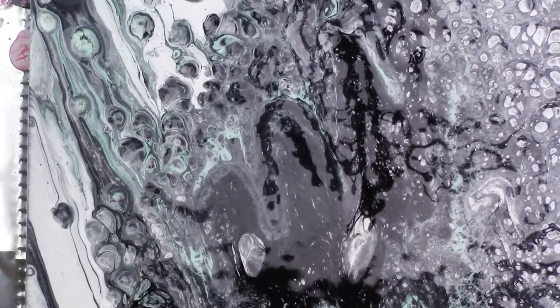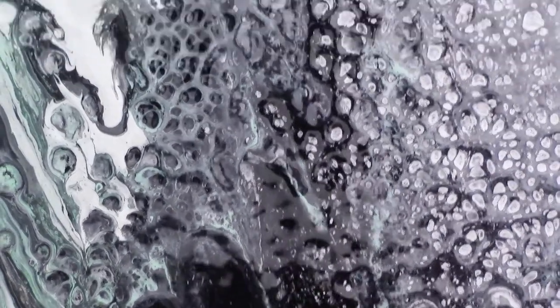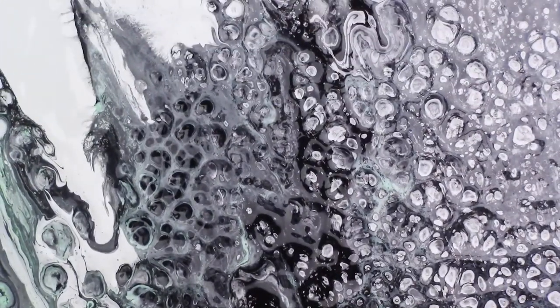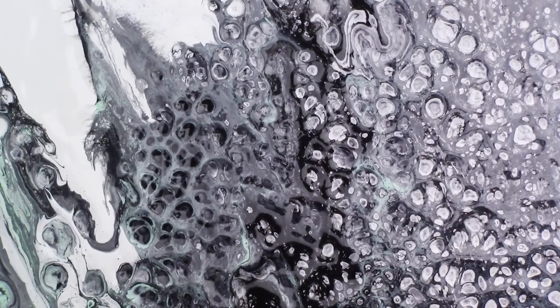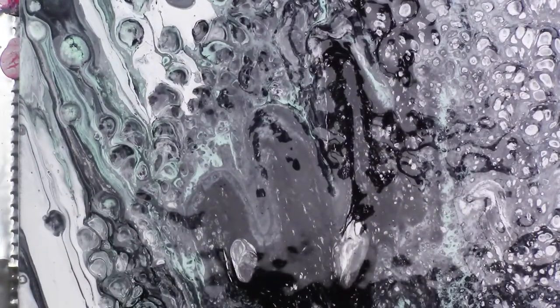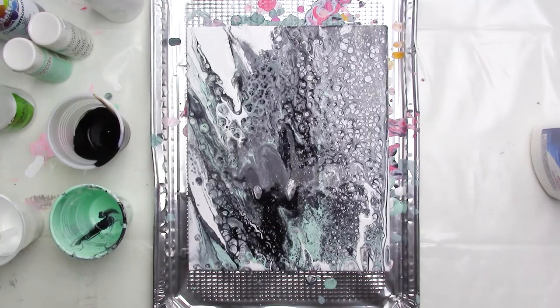I'm wondering what would have happened if I would have added silicone to the white paint as well, or if I would have let the paint sit without spritzing it with alcohol, or what would have happened if I would have added more silicone oil to the paints. I definitely want to explore more with the silicone oil and cells, and let me know in the comments below if you'd like to see more cell experiments too.